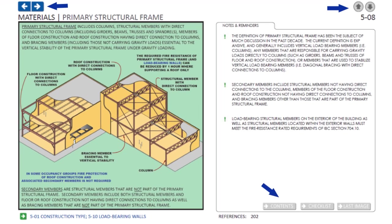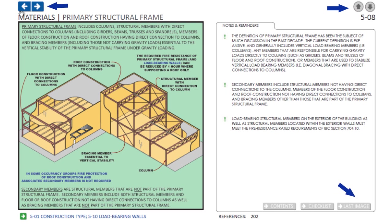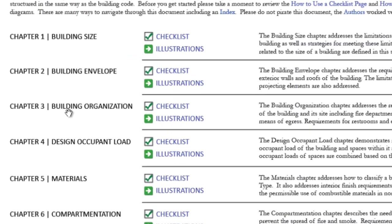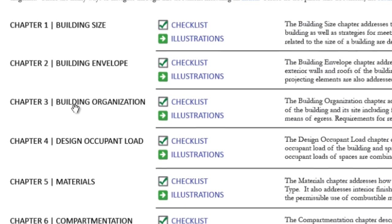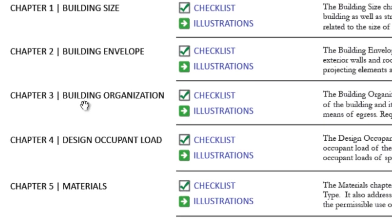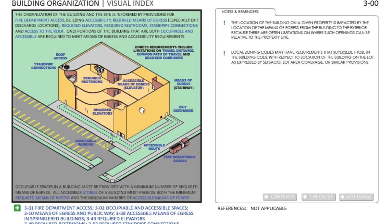Navigation buttons are provided so you can always move back through the document to revisit previously viewed information or return to the table of contents. Another checklist and set of illustrations is entitled Building Organization, and it relates to requirements that inform decisions about placing the building on a site and arranging the components of the building. This time I'm going to skip the checklist and start on the first illustrated page.